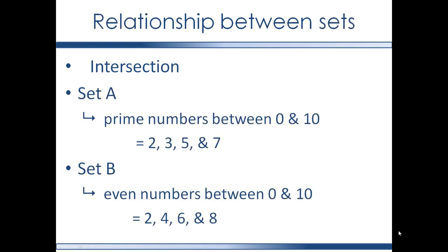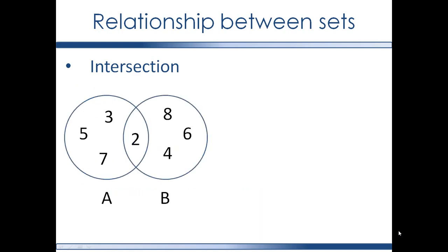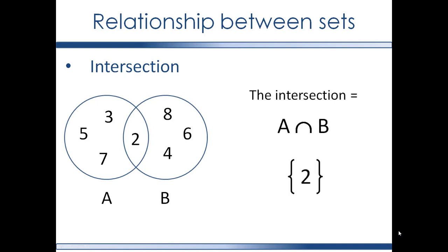Now we're going to look at the relationship between sets, starting with intersections. Let's look at these two sets. Set A contains all the prime numbers between 0 and 10. Set B contains all the even numbers between 0 and 10. Notice that 2 is a common element between set A and set B. So the intersection of A and B is a set containing the element 2. An intersection of two or more sets is itself a set. Intersections are represented with this symbol — it's like an upside-down wide U.